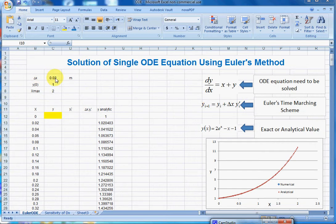So we will use delta x equal 0.02 and initial value of y equal to 1. So let's start.